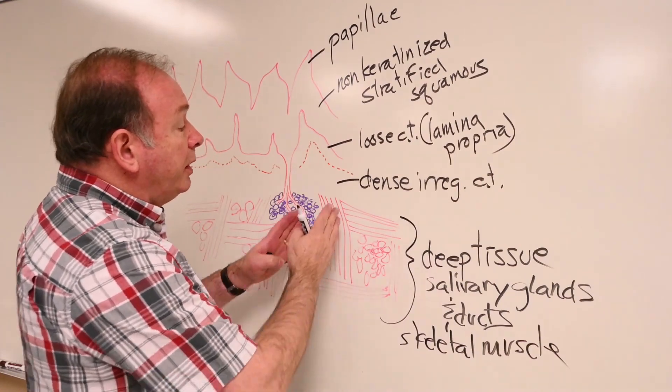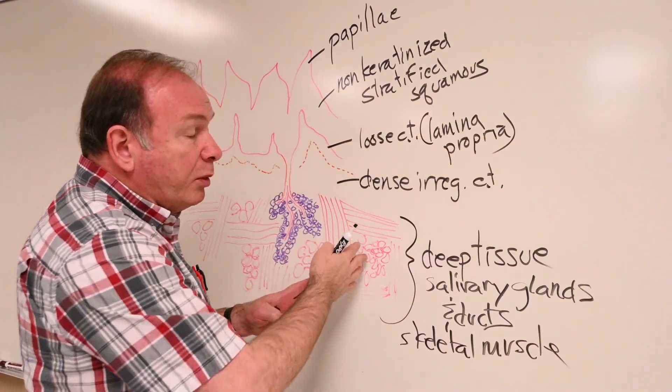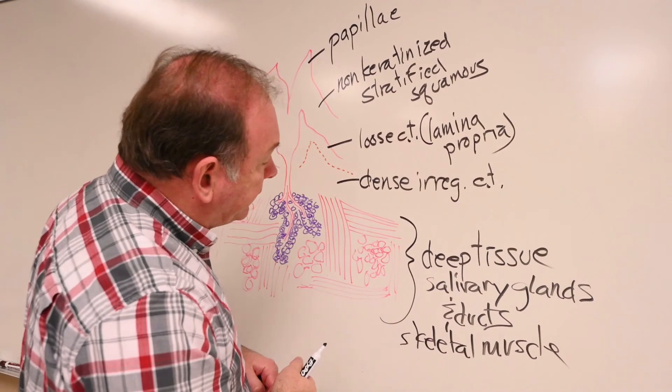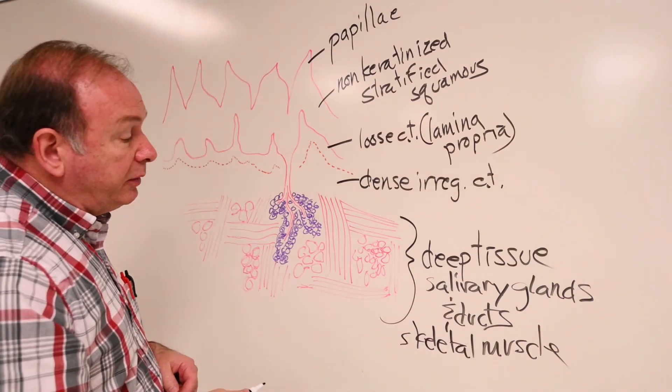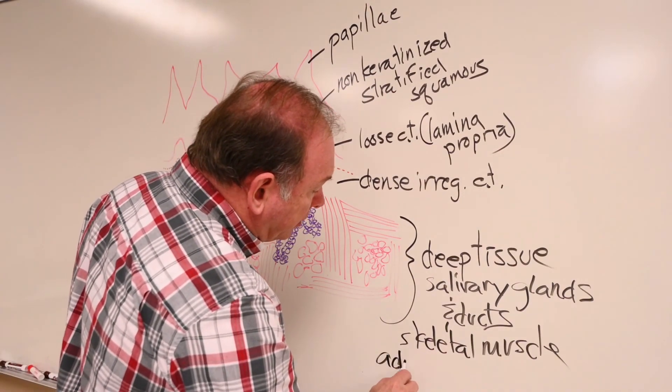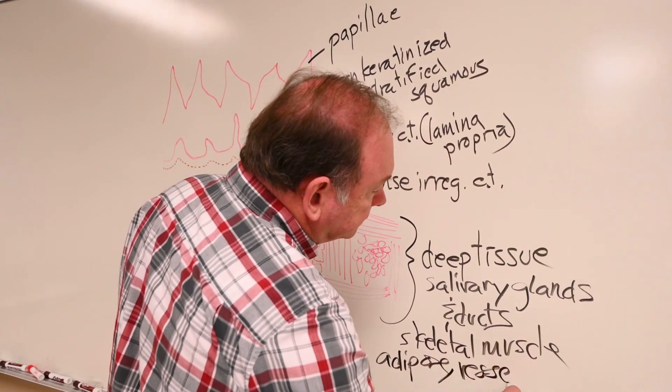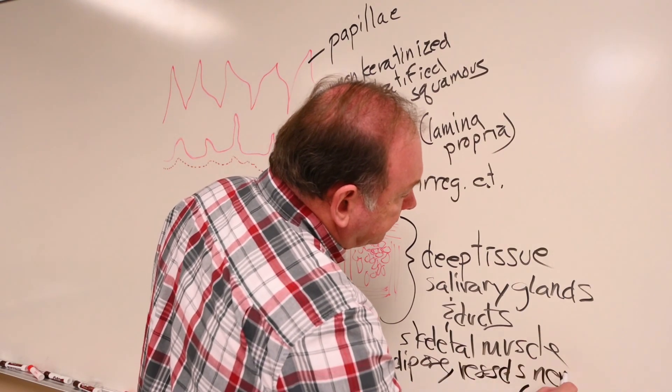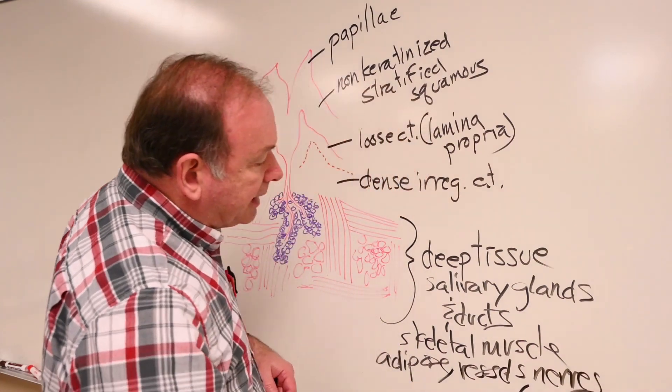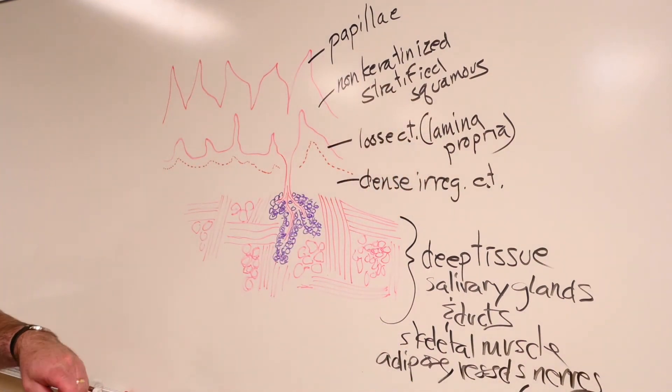So, we have different directions of skeletal muscle. Adipose, vessels, nerves, and the connective tissue that's between all the muscle in there.